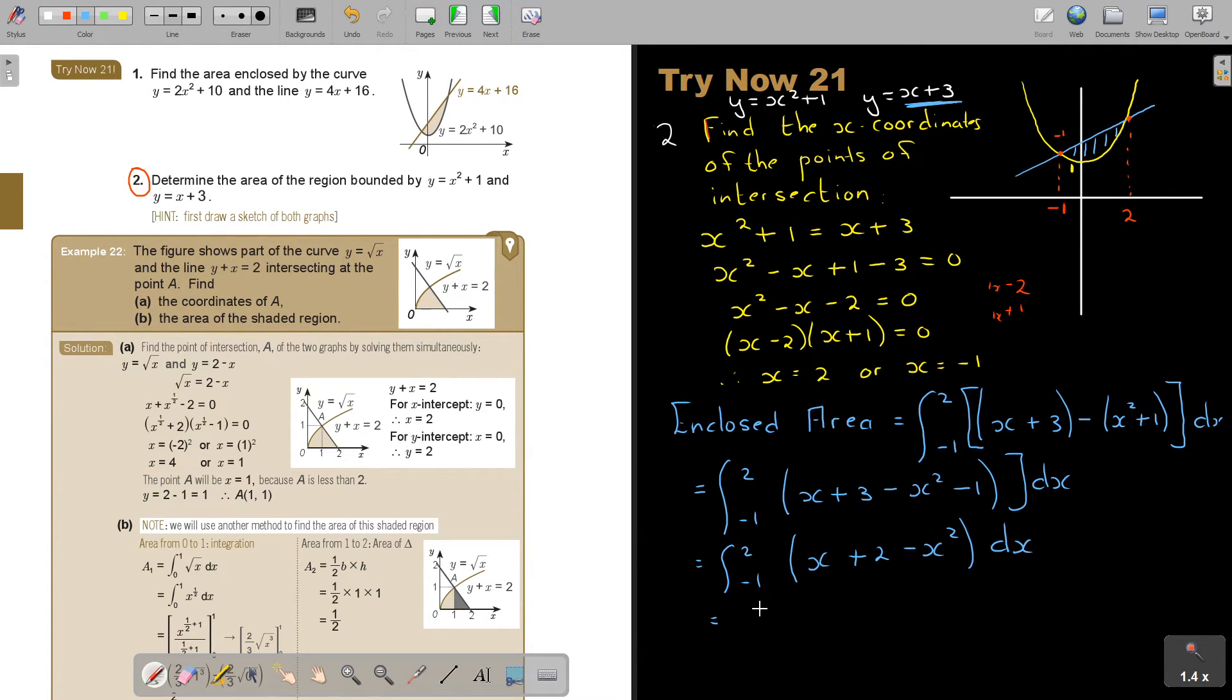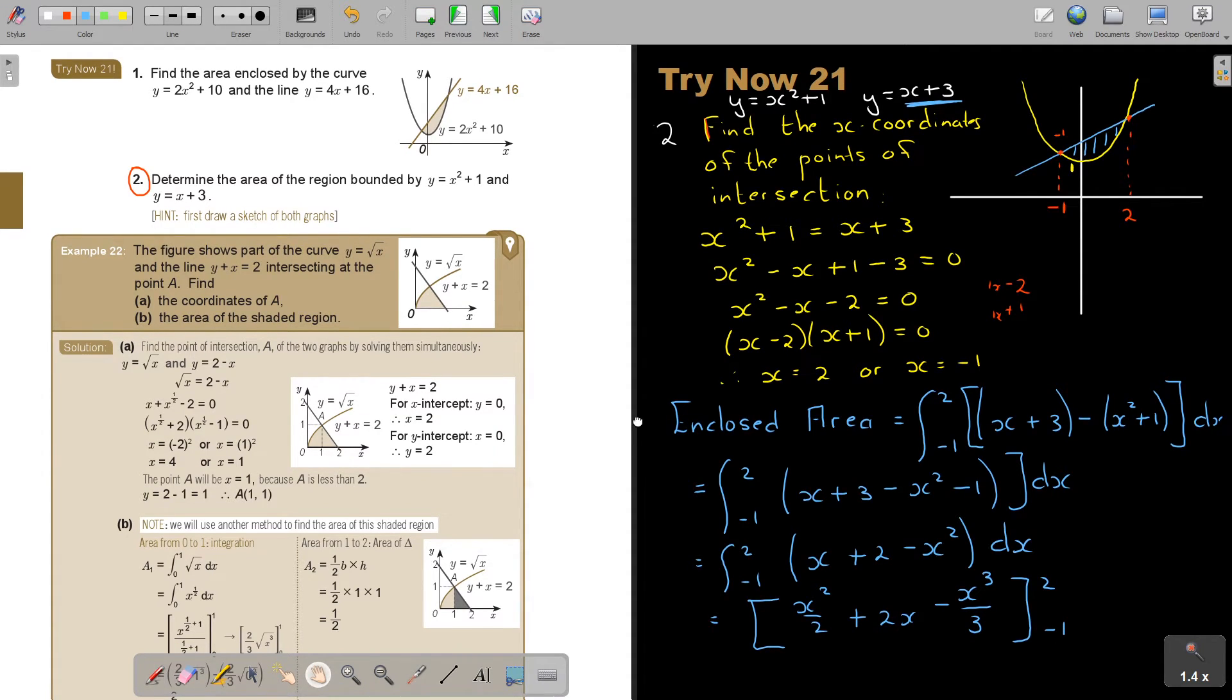Now I'm going to integrate. So this is going to be X squared over 2 plus 2X minus X cubed over 3, and my boundaries is 2 and negative 1. Then I'm moving it up.